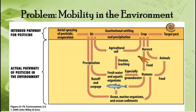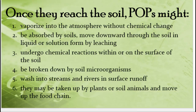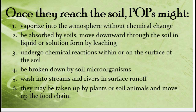Another major problem is the persistence of pesticides in the environment. Pesticides bioaccumulate in organisms' tissues and biomagnify up the food chain, most impacting top-level predators. Many pesticides are considered POPs — persistent organic pollutants — and are highly mobile in the environment. They wind up in soil, entering nutrient cycles like the nitrogen and carbon cycles. Because POPs are so mobile, they also get into water and air, spreading throughout the environment. They can vaporize into the atmosphere, be absorbed, undergo chemical reactions to form other toxic compounds, or get into the water supply.